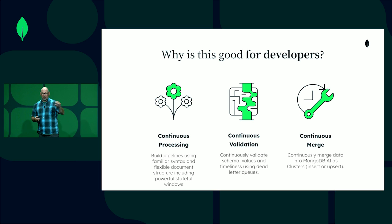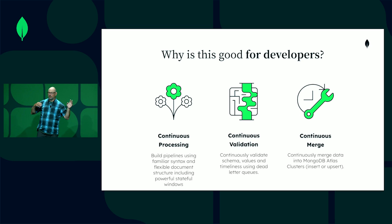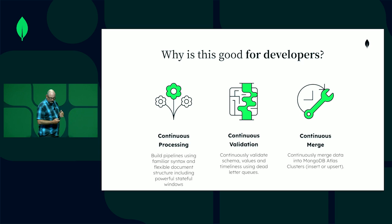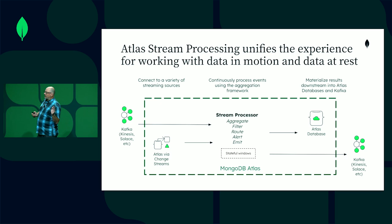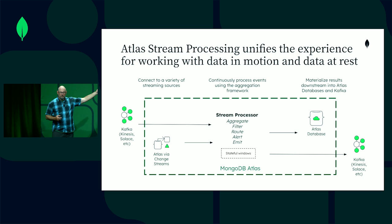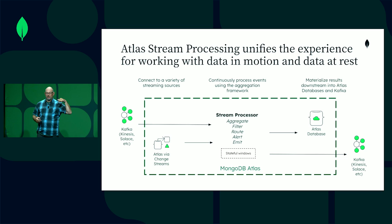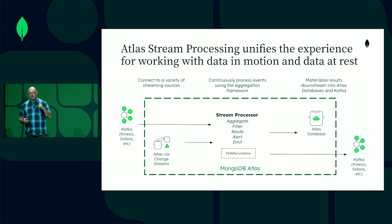Lastly, continuous merge. It allows you to take a pipeline of data, process it, and continuously merge it into Atlas. No batch jobs, no time cycles, no other infrastructure needed. You can simply say: as you get a stream of events, merge it into the database. On the left are sources like Kafka and MongoDB change streams. Atlas stream processing allows you to aggregate, filter, route, and process that data, then write it to MongoDB via continuous merge or back out to Kafka. You can compose these processors by writing from Kafka, processing, and writing back out again.